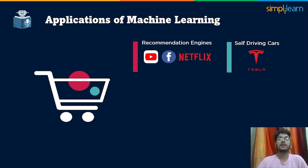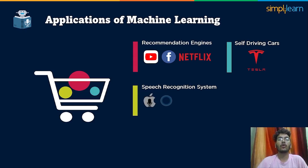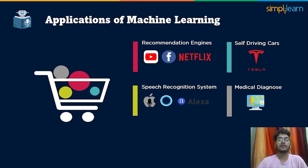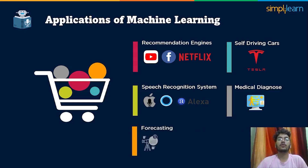Another application of machine learning is speech recognition. We are all aware of voice assistants like Siri by Apple, Cortana by Microsoft, and Alexa by Amazon — these assistants translate speech to text and use machine learning to provide results. Machine learning is also used in the medical sector to determine various diseases; the patterns and symptoms of disease can easily be diagnosed. The last application is forecasting — weather forecasting and financial forecasting are applications of machine learning in which future outcomes are predicted using historical data, involving statistical modeling, data mining techniques, and machine learning.